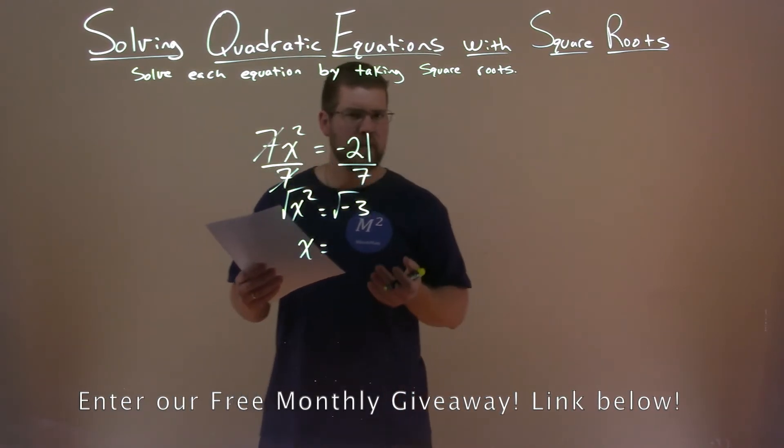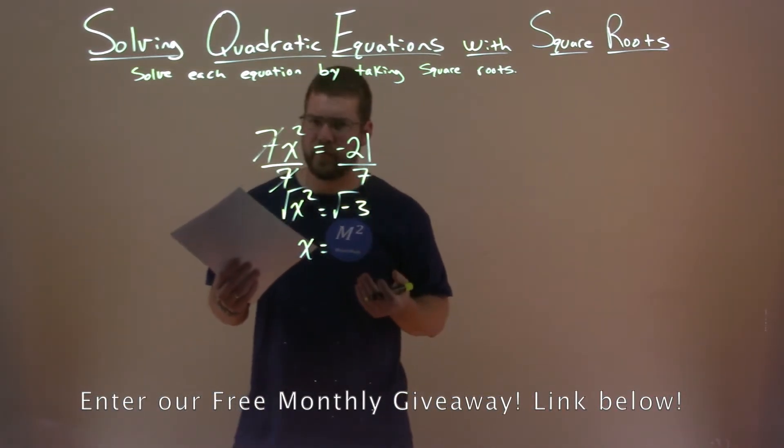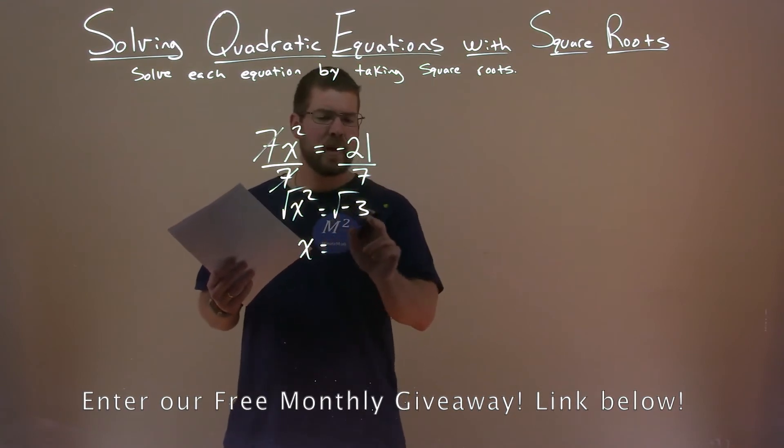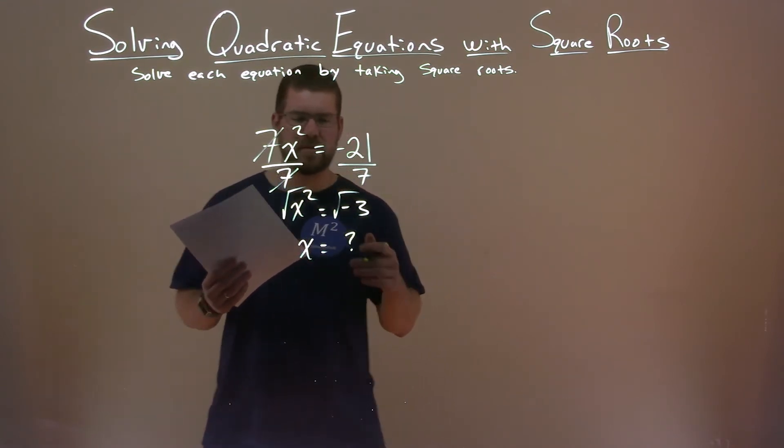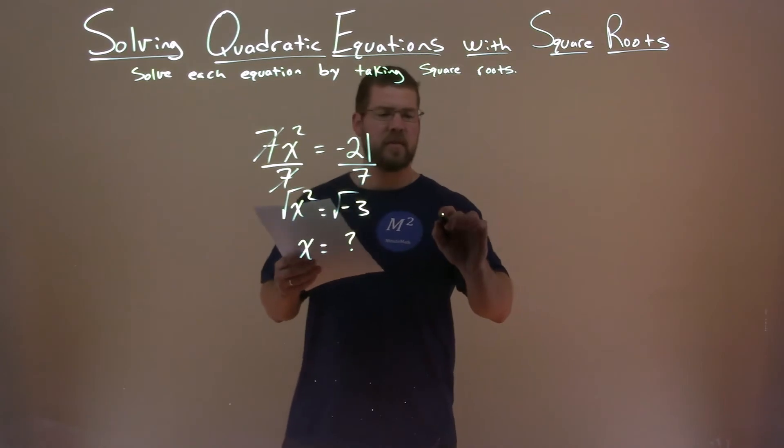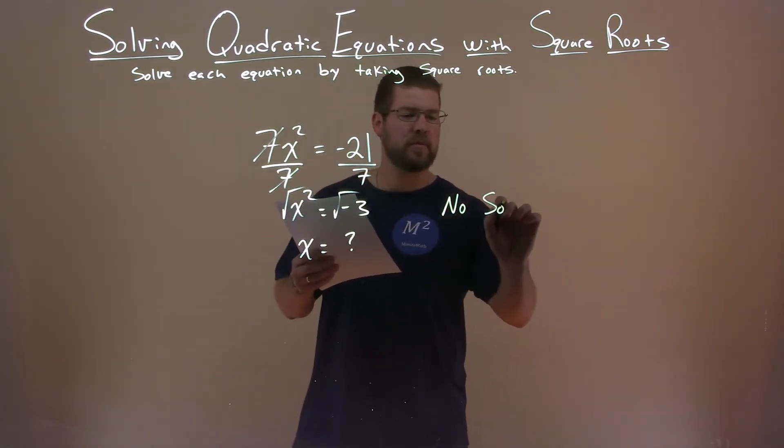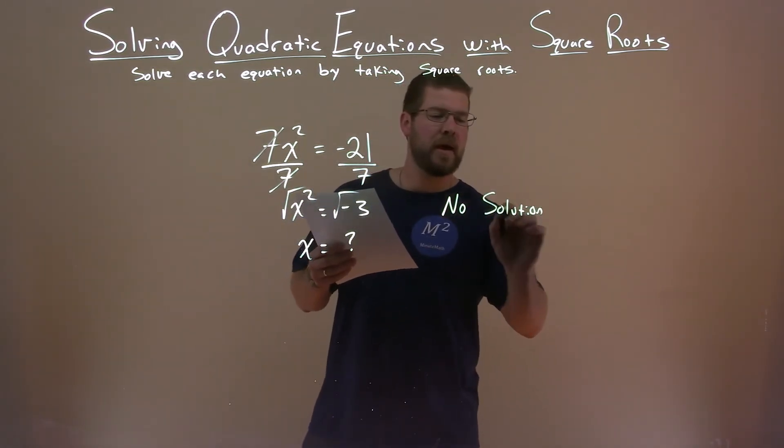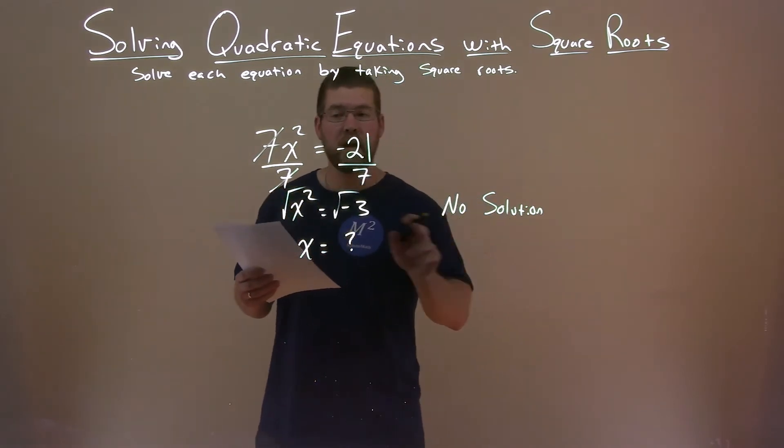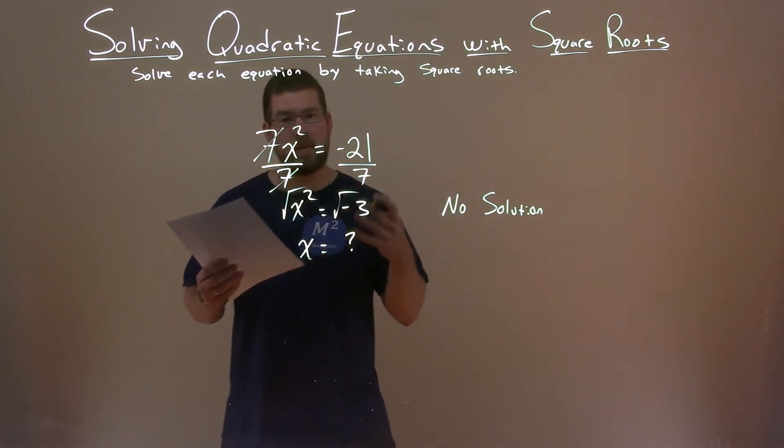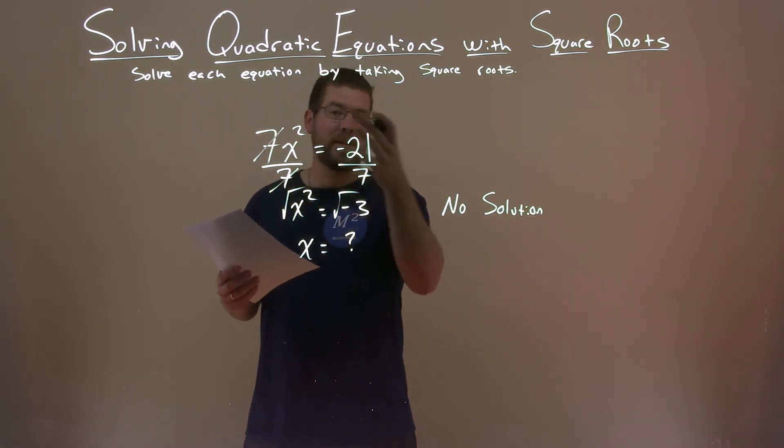Well, can we take the square root of a negative number? No, we can't. So square root of negative 3 doesn't really exist. It's an imaginary number. So in this case, we have no solution as our final answer, meaning there's no value for x that can be plugged in to make this equation true.